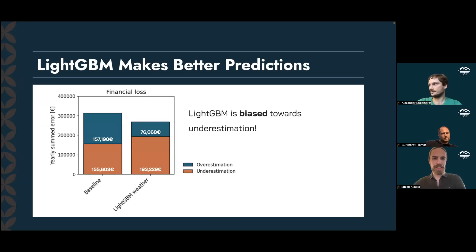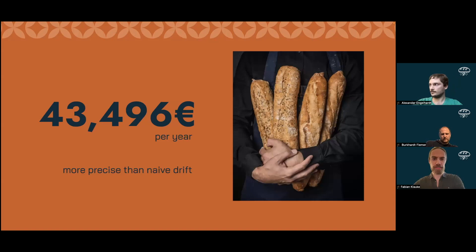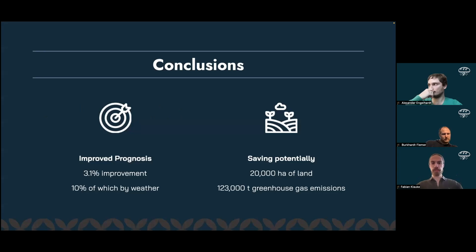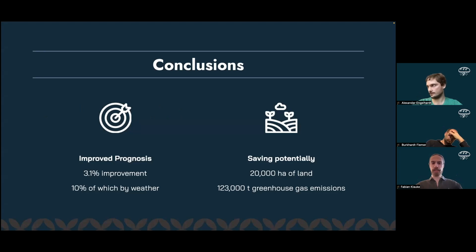Overall, we save about 43,500 euros per year with our current model compared to our baseline. To further sum up: our model improves prognosis by about 3.1 percent over baseline, and about 10 percent of that improvement stems from including weather data. While these improvements seem rather small, they amount to those 43,500 euros per year in savings — and if we relate them to the numbers from the beginning, potentially saving 20,000 hectares of land and over 123,000 tons of greenhouse gas emissions each year.